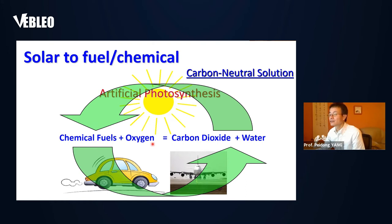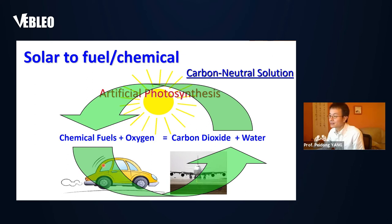Essentially, in terms of fighting global warming and climate change, this offers a carbon-neutral solution to mitigate CO2. We can use renewable solar energy, and at the same time reverse the process—mitigating CO2 and converting it into useful chemical fuels. The whole cycle continues with those fuels, and the only energy input is sunlight.